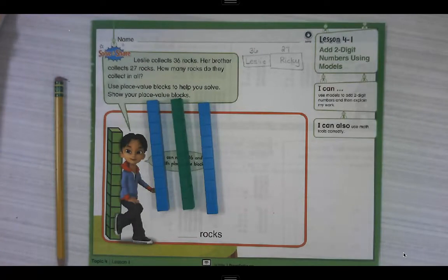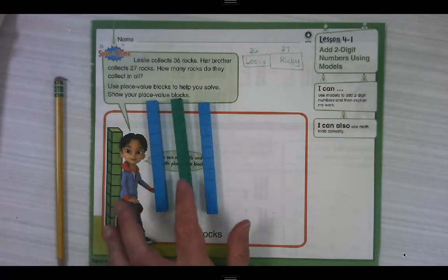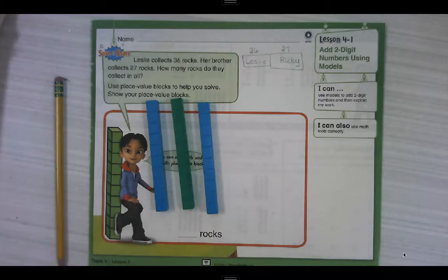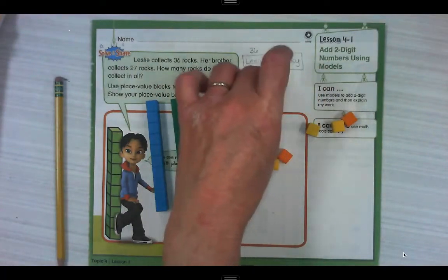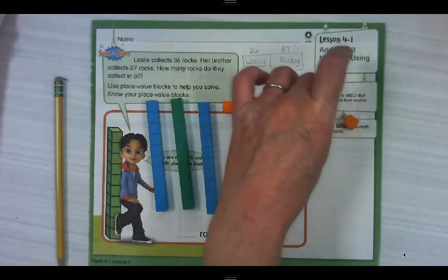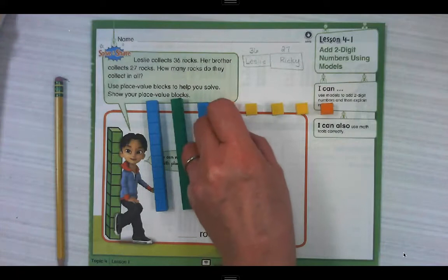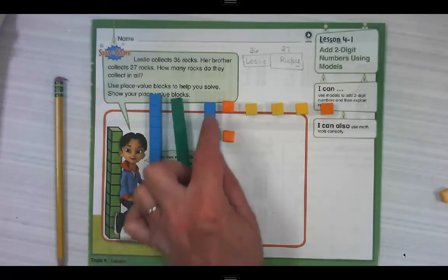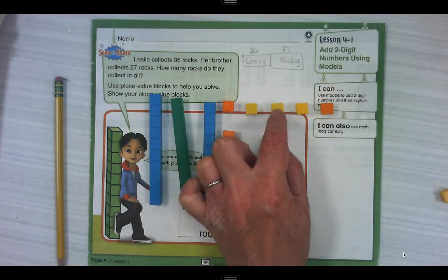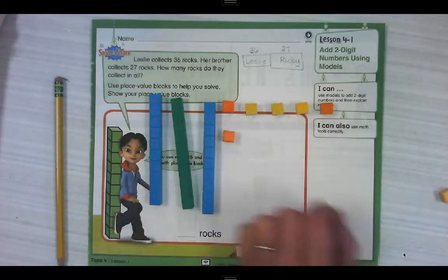That uses three 10s: 10, 20, 30, and six ones. And I'm always, always, always going to model those ones in the shape of a 10 frame. So this is 36. We count these by 10s: 10, 20, 30, 31, 32, 33, 34, 35, 36.